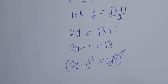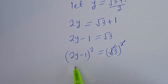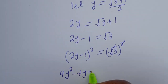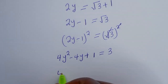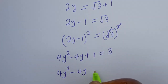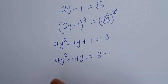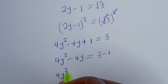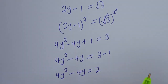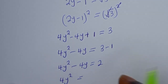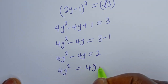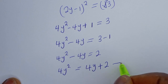The square root and square cancel. Squaring the left side: 4y squared minus 4y plus 1 equals 3. So 4y squared minus 4y plus 1 equals 3. Rearranging: 4y squared equals 4y plus 2. Let's call this equation double star.